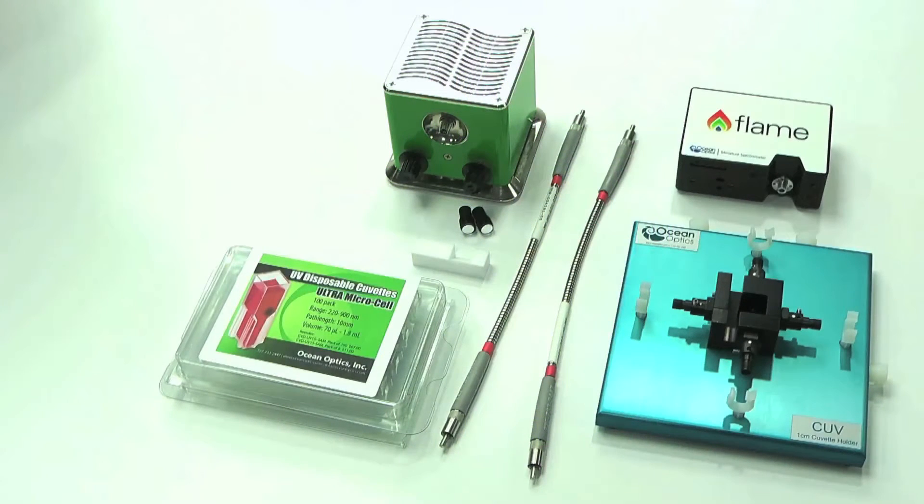The equipment used in this setup is as follows: the Flame spectrometer configured for UV-VIS, and two 600 micron UV-VIS patch cords with SMA connectors.